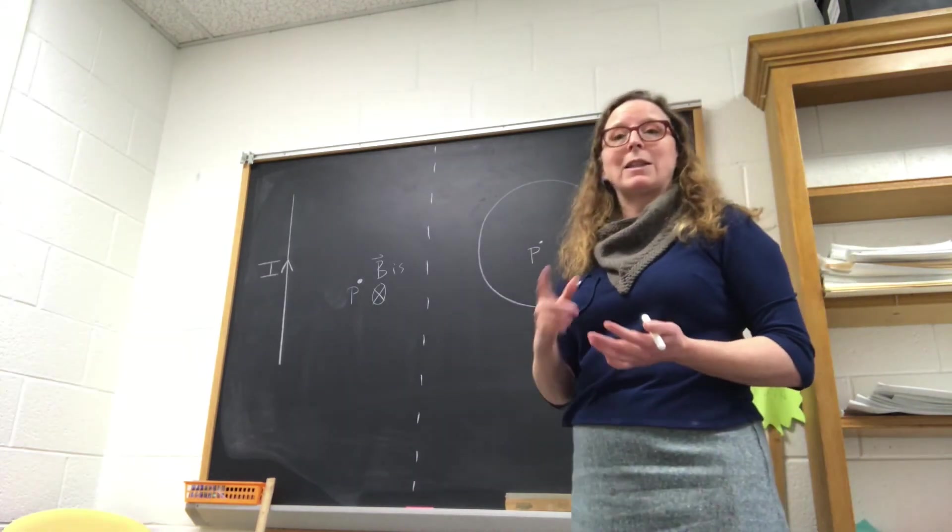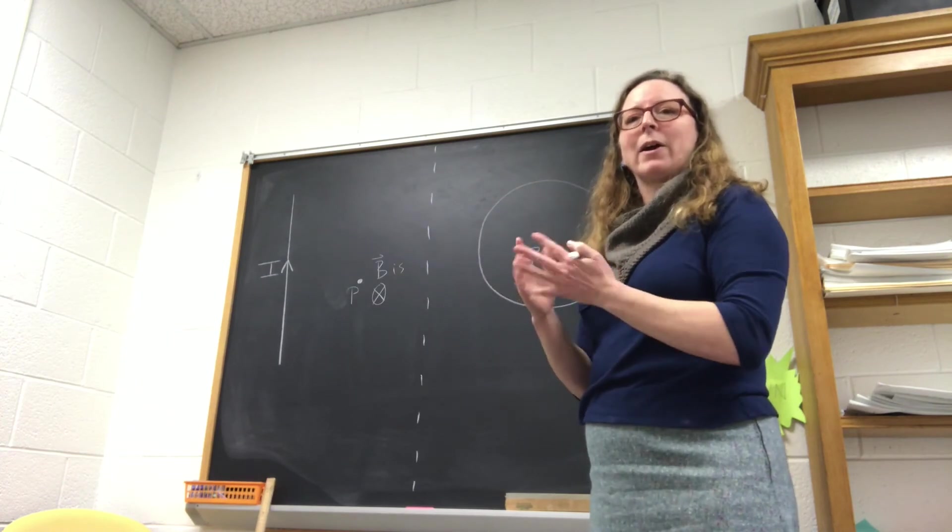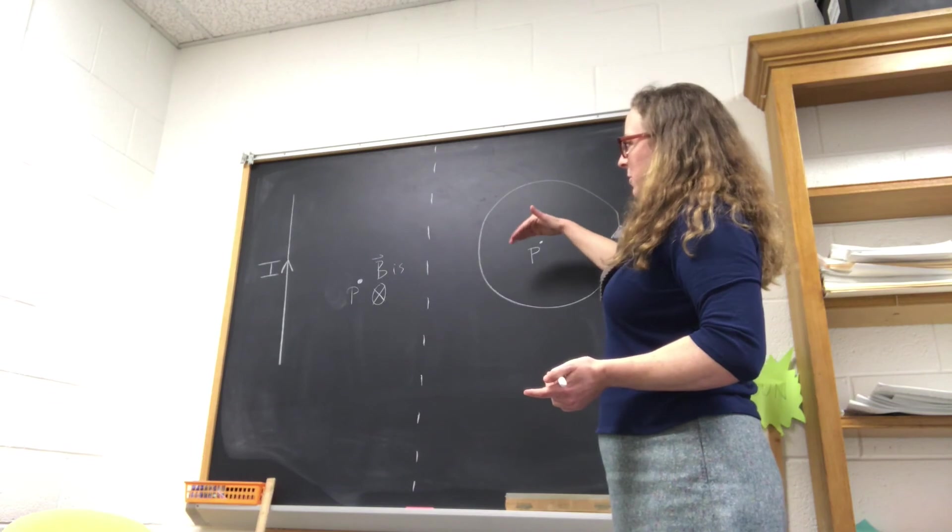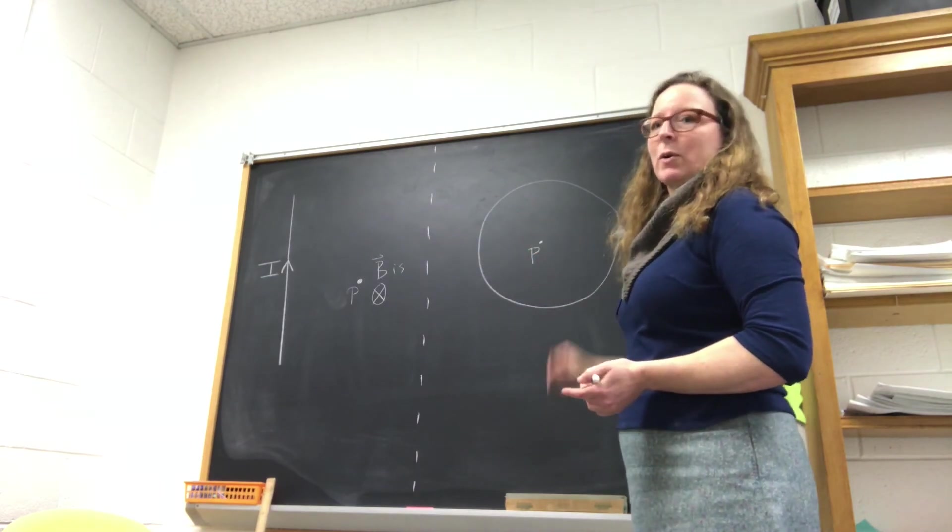In this case, the thing that's curling is the current-carrying wire. So what we do is we sweep our fingers in the direction that the current is going around the loop,